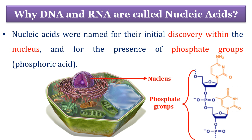DNA and RNA are called Nucleic Acids because initially they were discovered within the nucleus, so the word 'Nucleic' is taken. These biomolecules possess a Phosphate group, which is a derivative of Phosphoric Acid, and because of this they show acidic nature, so the word 'Acid' is taken. By their combination, they are termed Nucleic Acid.